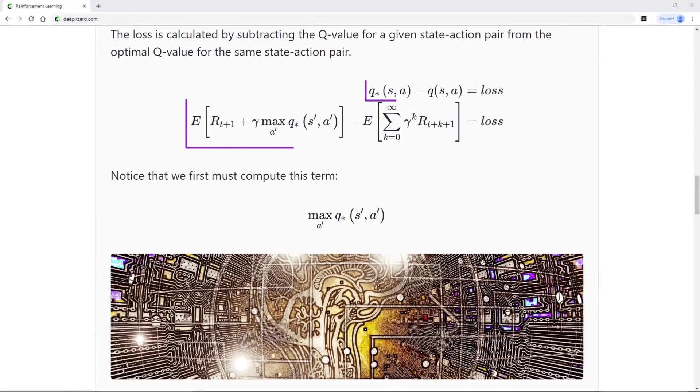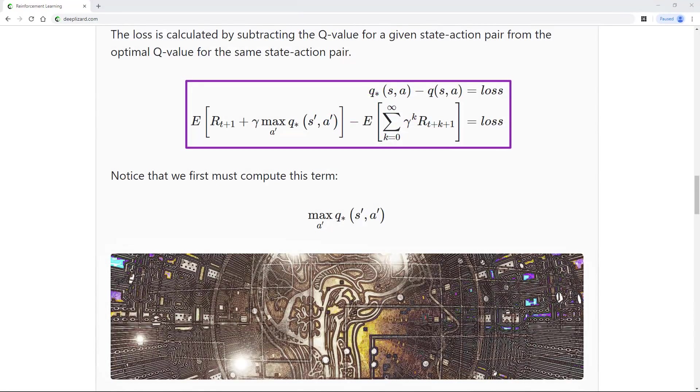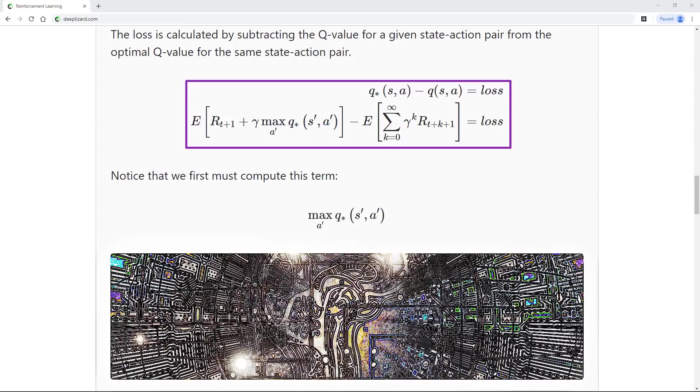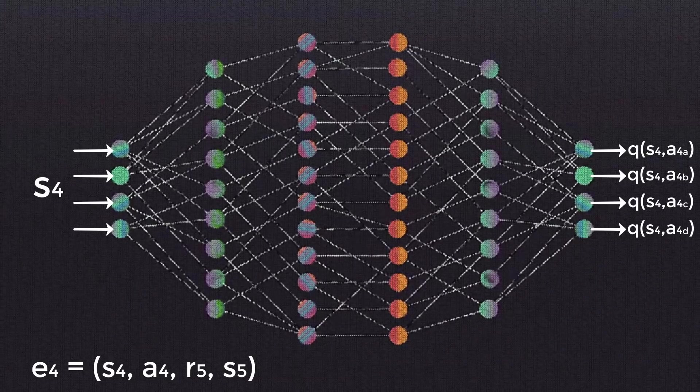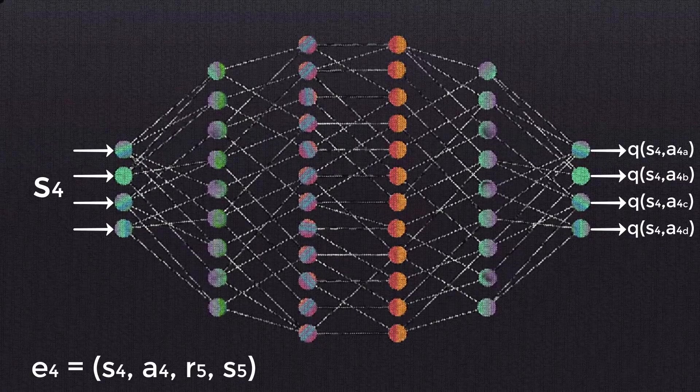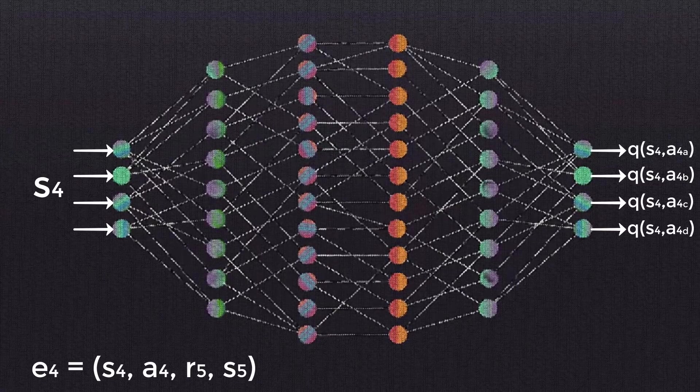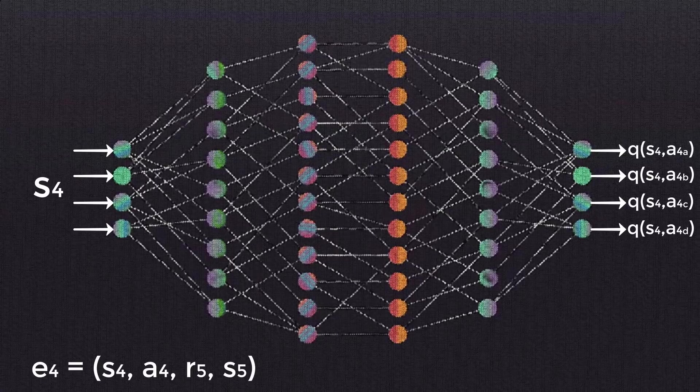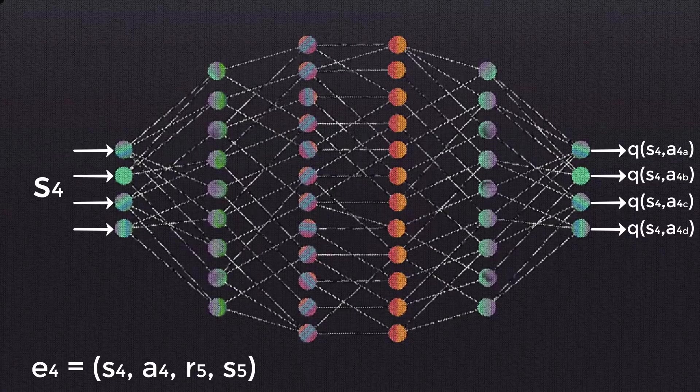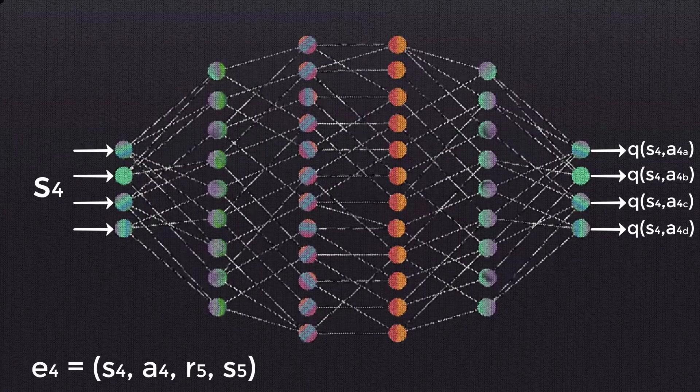Alright, so after we're able to calculate the optimal Q value for our state-action pair, we can then calculate the loss from our policy network between the optimal Q value and the Q value that was output from the network for this state-action pair. Gradient descent is then performed to update the weights in the network in attempts to minimize the loss, just like we've seen in all other previous networks that we've covered on this channel. In this case, minimizing the loss means that we're aiming to make the policy network output Q values for each state-action pair that approximate the target Q values given by the Bellman equation. This will ultimately approximate the optimal Q function, which will give us the optimal policy.